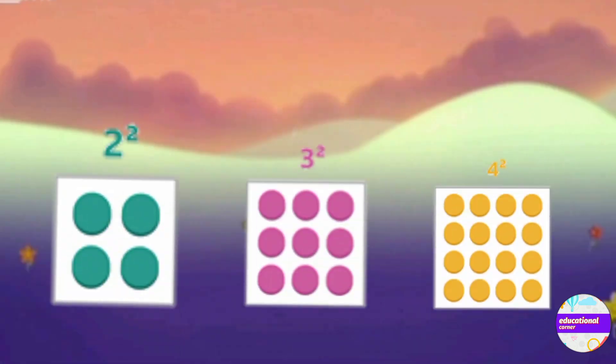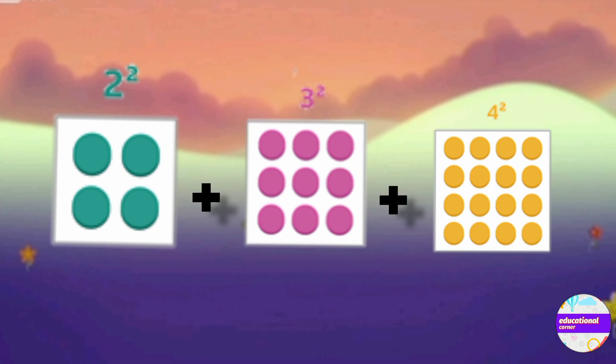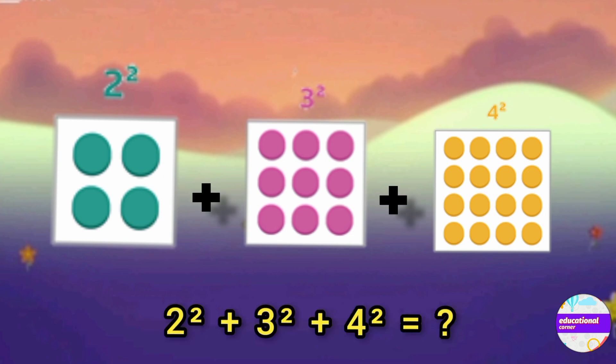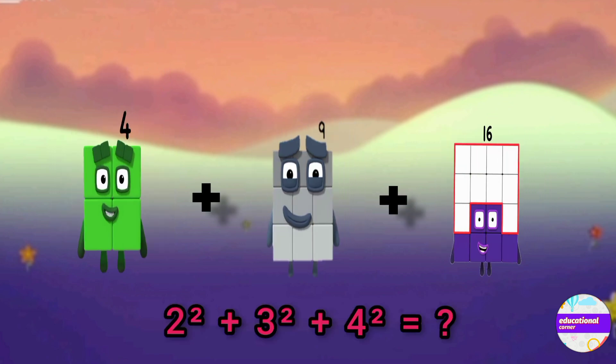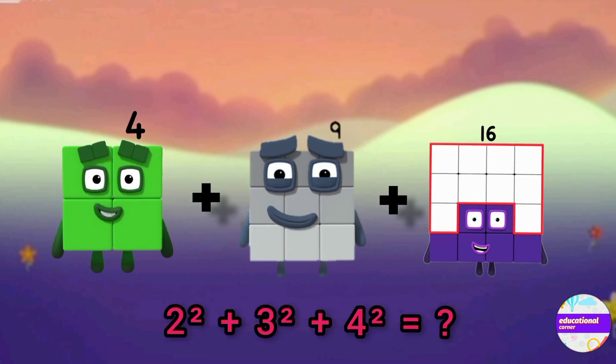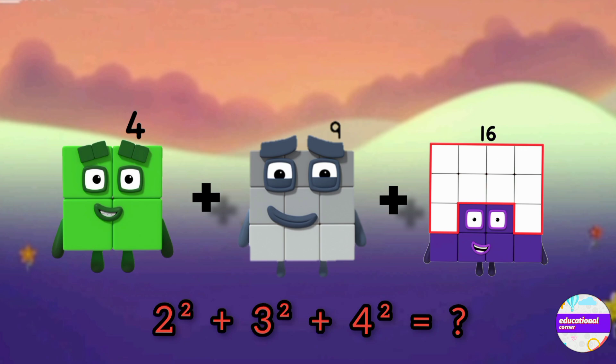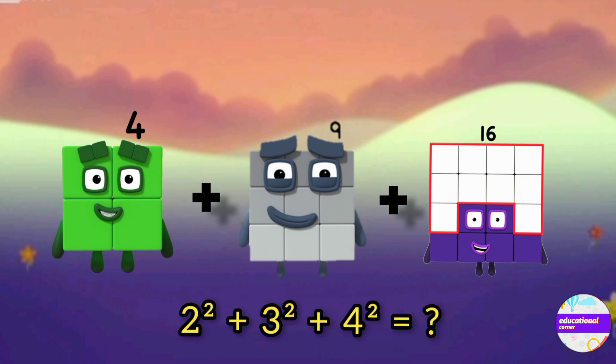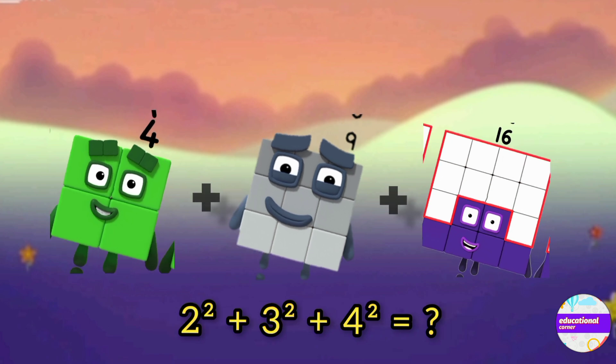The second sequence is 2, 3, 4. Two squared is four, three squared is nine, four squared is sixteen. Now add them together.